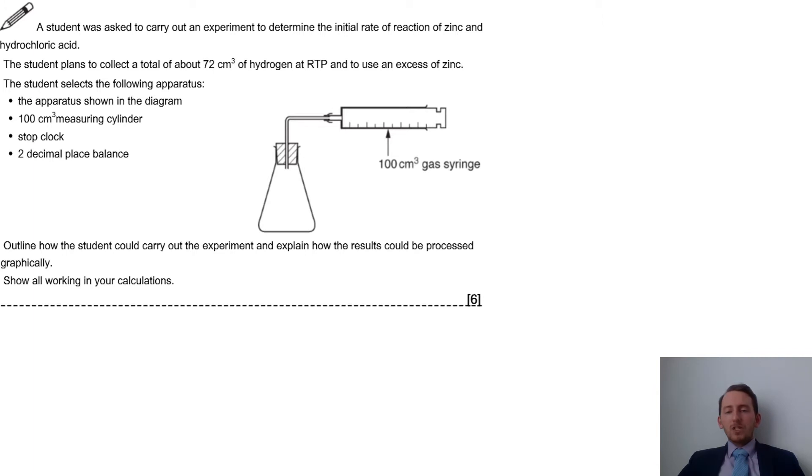Now this question is six marks, quite a difficult question when it comes to the calculations. If we have this setup here we have zinc reacting with hydrochloric acid, we form some hydrogen and we're collecting that gas. We have excess amount of zinc with the apparatus there, and we have to outline the experiment and explain how the results can be processed graphically, showing all your calculations.